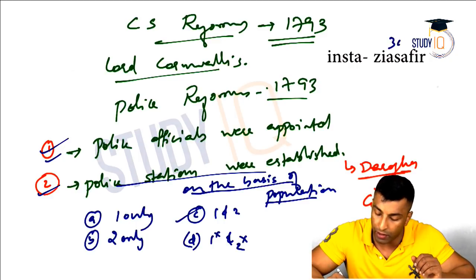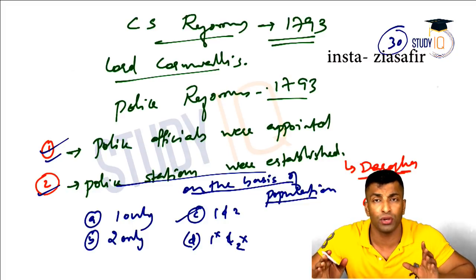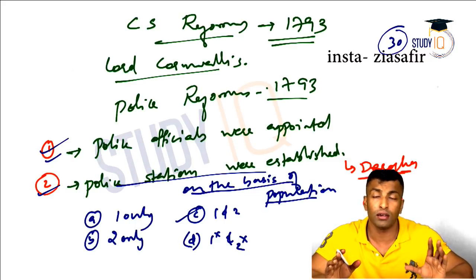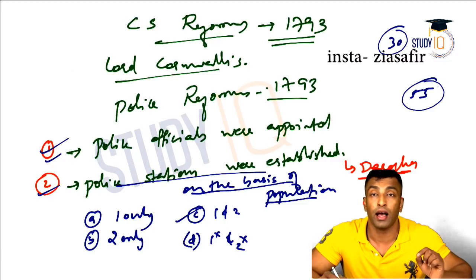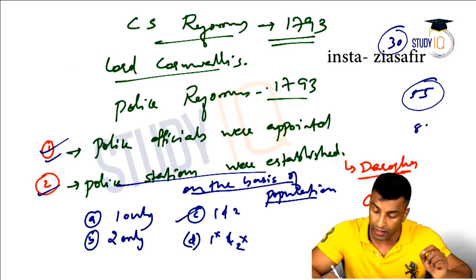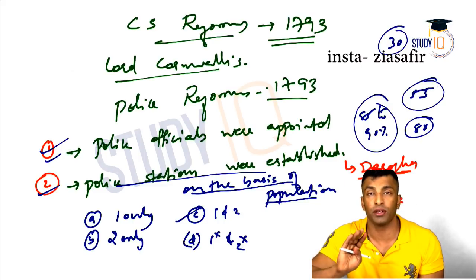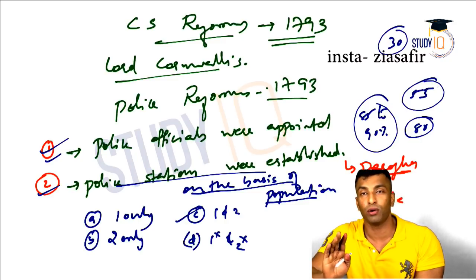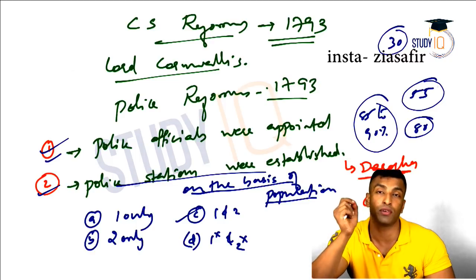In prelims, you can rarely be 100% sure of more than 30-40 answers. For the rest, you have to take chances and make guesses. The ideal strategy is to attempt around 75 to 80 questions with 85 to 90% accuracy — not attempting only 55 with 100% accuracy, which is never going to happen.